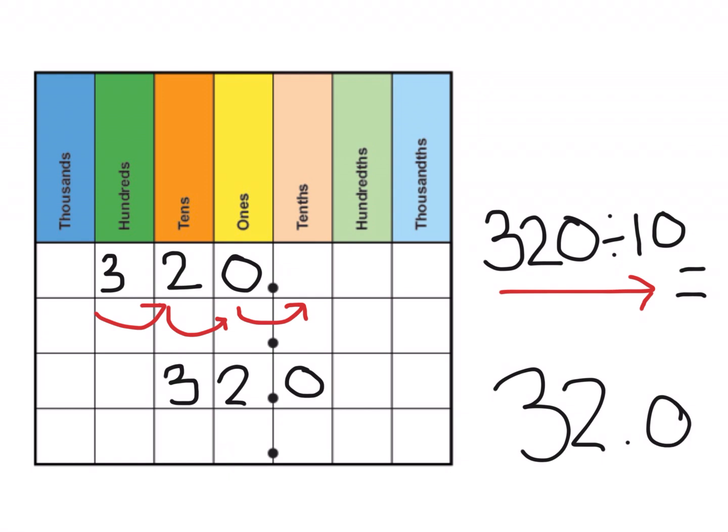I don't need to put the 0 because there's nothing there, so I just don't put it. That is how to divide by 10 using a place value chart.